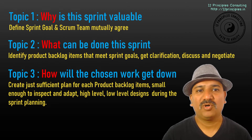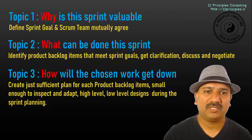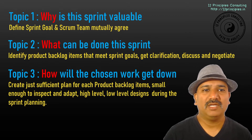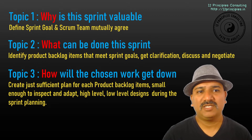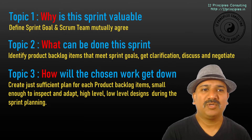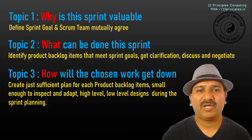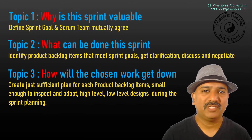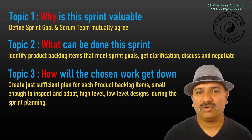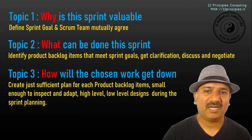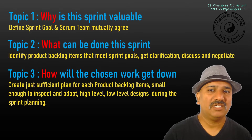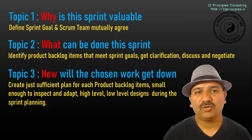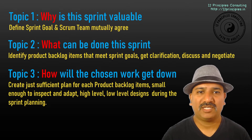In topic two, the team members discuss about what can be done during the Sprint. During this phase, the team members identify the Product Backlog items that meet the Sprint Goal, get clarifications, discuss, and negotiate as required.